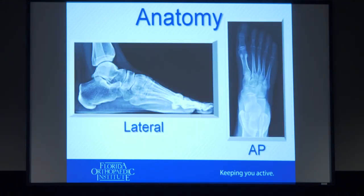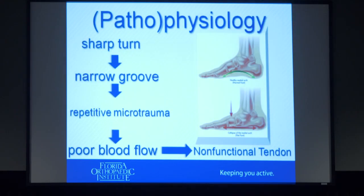These are a couple of x-rays showing the bones of the foot from a side view and a top view. The pathophysiology: it's a sharp turn in a narrow groove, the tendon gets lots of little injuries with poor blood flow, and with time it stretches out. It usually doesn't rupture completely — more like a rope that frays and gets stretched out and beat up. Once it stretches too much, it's like a worn-out rubber band — still intact, but not doing its job.